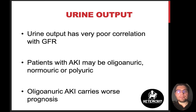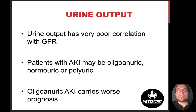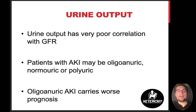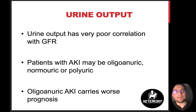A few words about urine output: the key idea is that urine output has very poor correlation with GFR. The only exception is complete anuria — zero urine production — when we know GFR is zero. Patients with AKI may have low, normal, or high urine output. Oliguric/anuric AKI patients have less chance to survive compared to polyuric AKI patients; however, urine output is an inaccurate predictor of GFR.